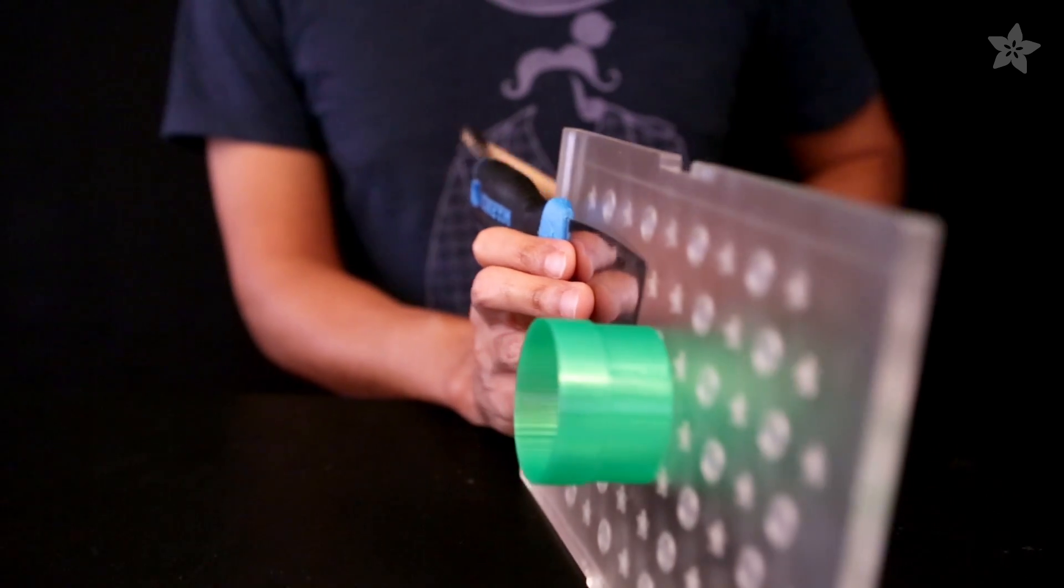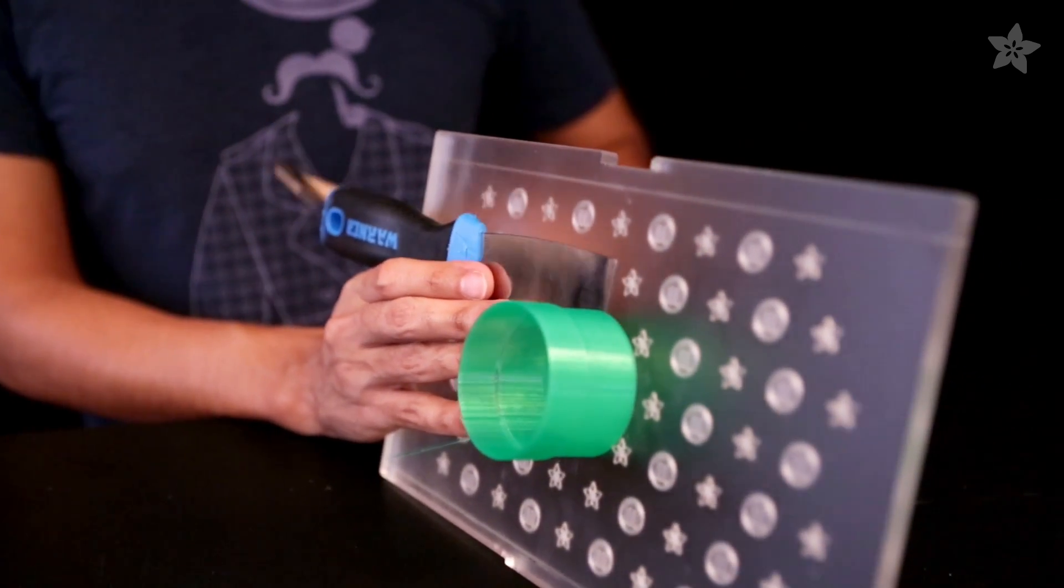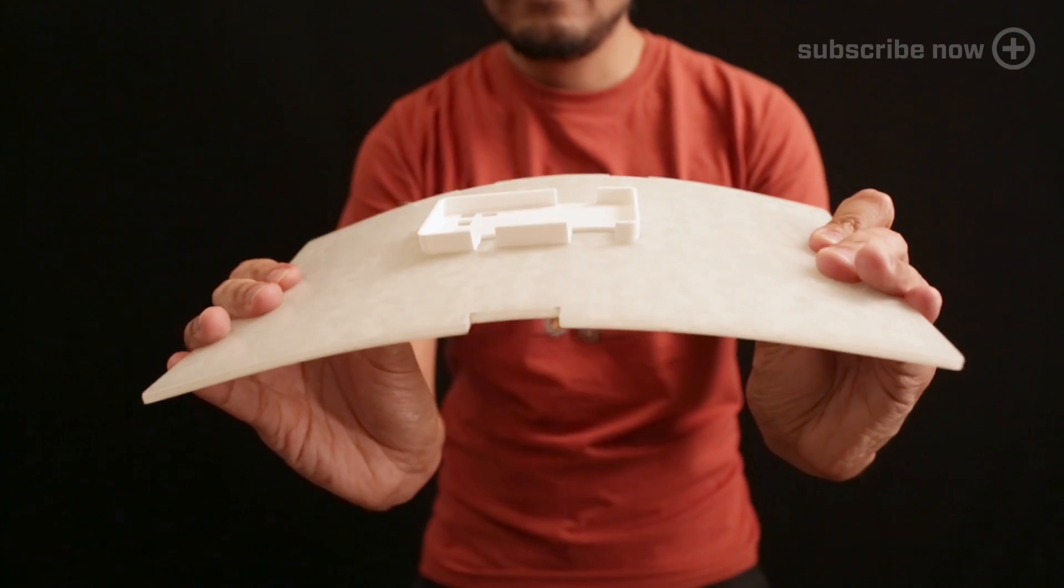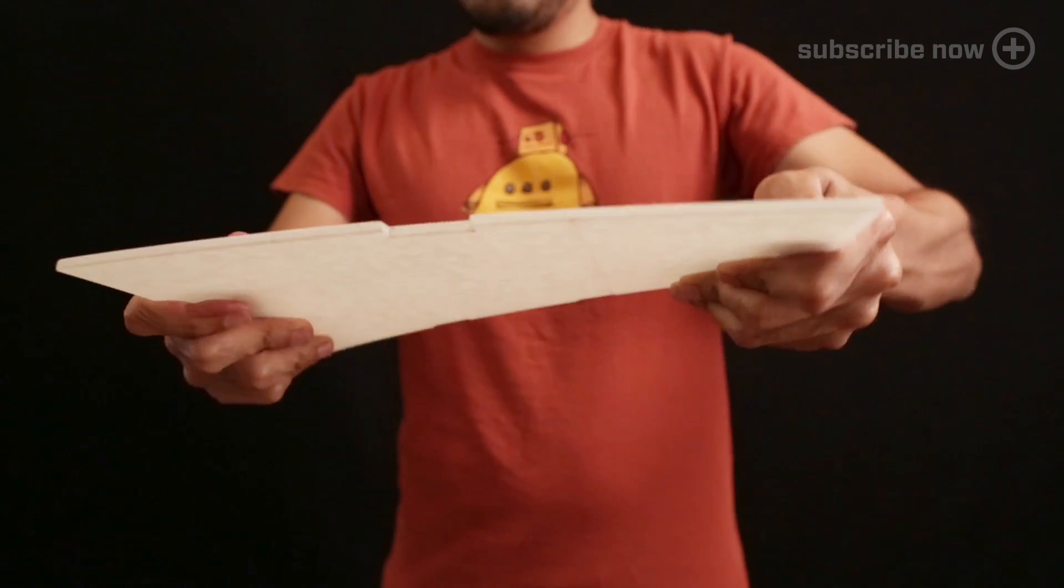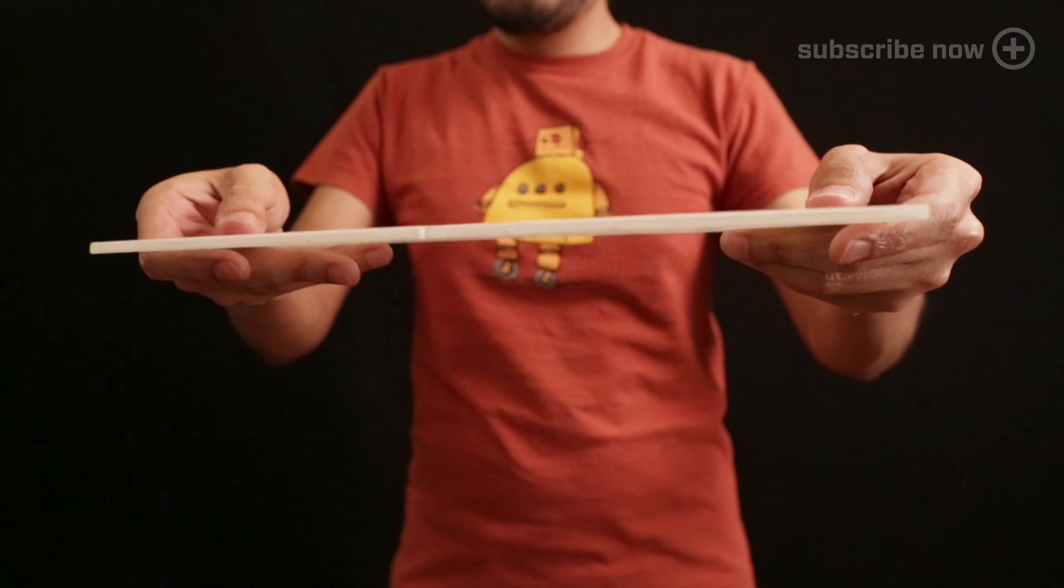Removing 3D printed parts from your build plate can be a little hard sometimes. Ninja Plate is a strong and flexible karate chop and printing surface. It bends without breaking and straightens back out to a flat plate.